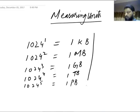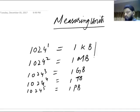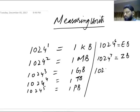Then 1024 to the power six equals to 1 exabyte, then 1024 to the power seven equals to 1 zettabyte.